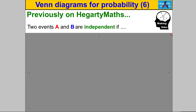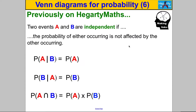Pause and double check you can remember that. The particular result we're going to use over and over again is: when two events are independent, it is true that the probability of A and B is the probability of A multiplied by the probability of B. We're going to use that again and again, so that's the key one to remember.